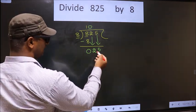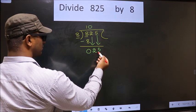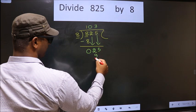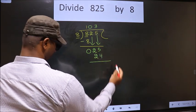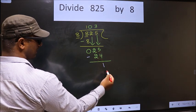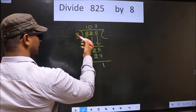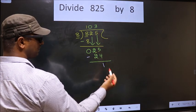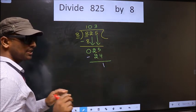Next. Here we have 25. A number close to 25 in 8 table is 8 threes, 24. Now you subtract. 25 minus 24 is 1. 1 is smaller than 8. We don't have any more numbers to bring them down. So this is where we stop.